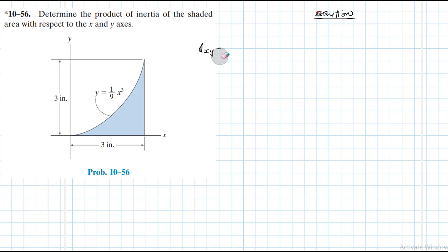It doesn't matter whether we write I_xy or I_yx — they are equal. This is defined as the integral of x·y·dA. In moment of inertia we were squaring the distance — x² or y² — but here we take the product of x and y, then multiply by the area element, hence the name product of inertia.